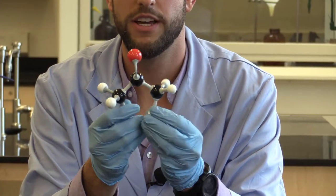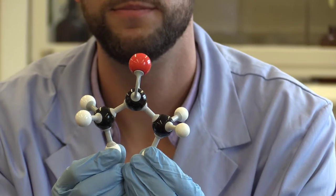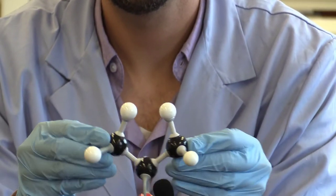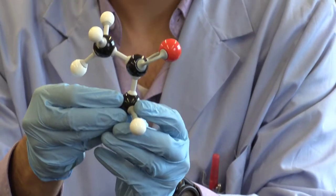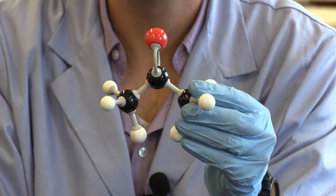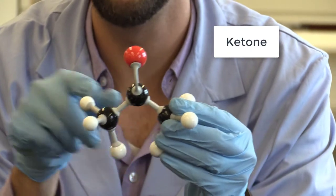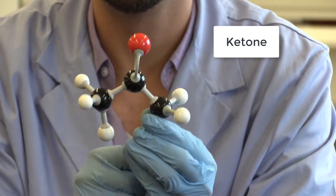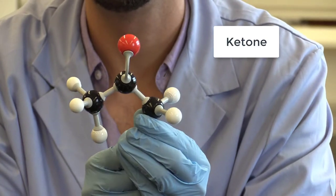Alright. And this one. So this guy here is our ketone. It's in the middle of our compound here. And the oxygen is double bonded to a carbon.